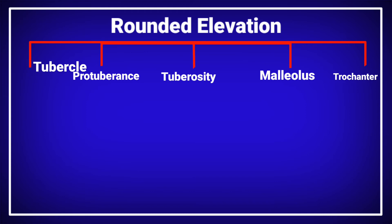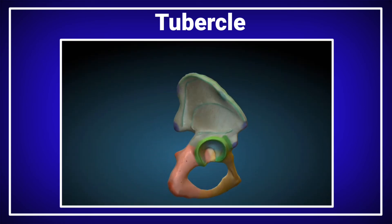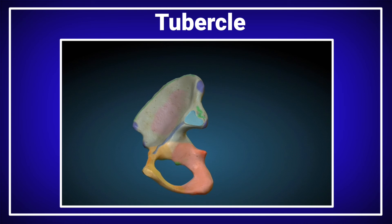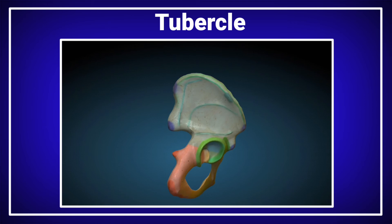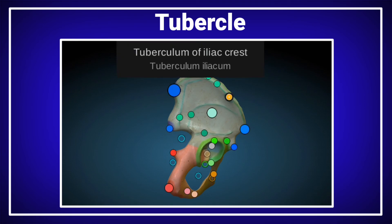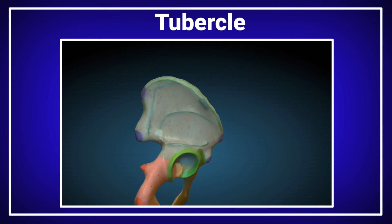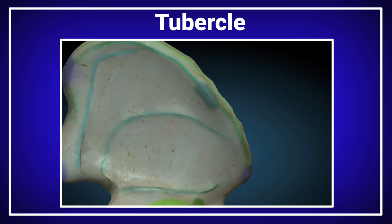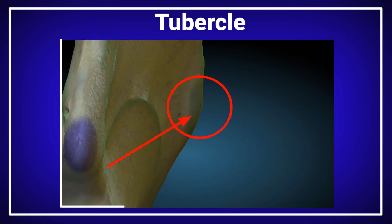Let's discuss them one by one. The tubercle — there are many tubercles present in the human body. We will discuss a tubercle present on the hip bone. There are many tubercles on the hip bone; however, we will discuss only one type: the tubercle of the iliac crest. The green shaded area is called the tubercle of the iliac crest.